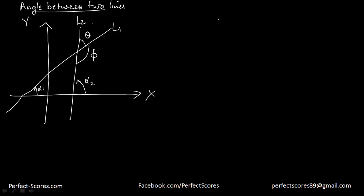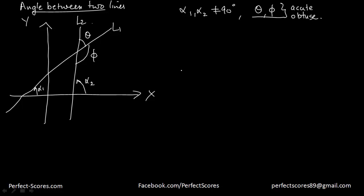One assumption we are making is that neither alpha one nor alpha two is equal to 90 degrees. This means that out of theta and phi, one of the angles will be an acute angle (less than 90 degrees) and the other will be an obtuse angle (greater than 90 degrees).